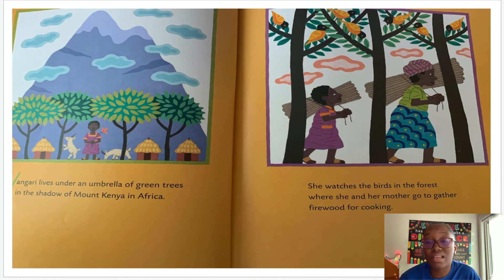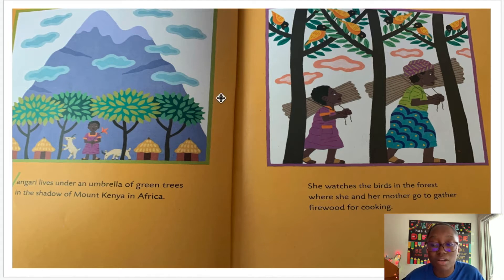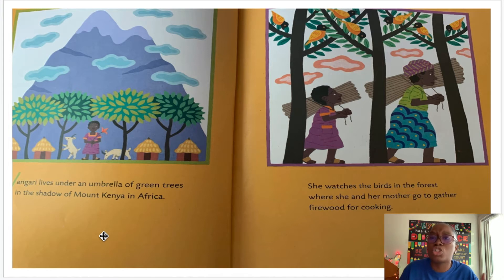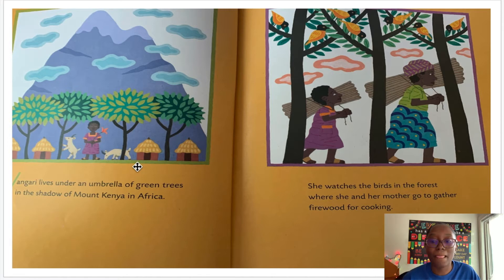So what can we learn about the setting after reading and looking at the illustration? Wangari lives under an umbrella, or covering, of green trees. She lives in Africa near Mount Kenya, a tall mountain in Africa. So the setting of the story is in Africa. Look at the illustration on page one — an umbrella is something usually used for protection from the sun and rain. How are the trees like an umbrella? The trees are like an umbrella because they are covering Wangari, the animals, and the houses. They are protecting them like an umbrella.